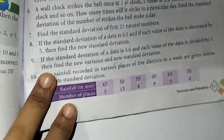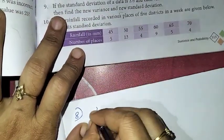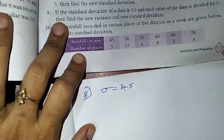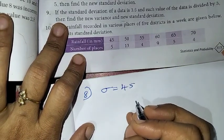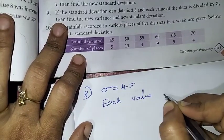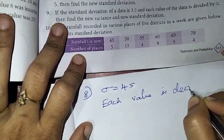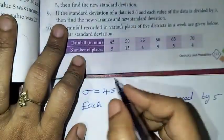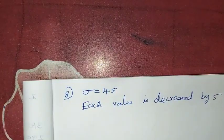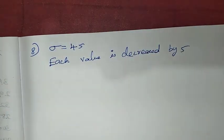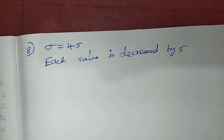The standard deviation of a data is 4.5, sigma. Standard deviation of some data is 4.5. And if each value of the data is decreased by 5, that is each value is decreased by 5. That is, some data is there, standard deviation is 4.5. Each value is decreased by 5. Then find the new standard deviation.